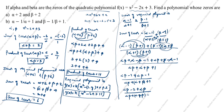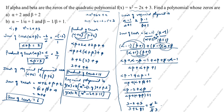Substituting alpha·beta = 3 and alpha + beta = 2: numerator = 2(3) - 2 = 6 - 2 = 4; denominator = 3 + 2 + 1 = 6. So sum of zeros = 4/6 = 2/3.